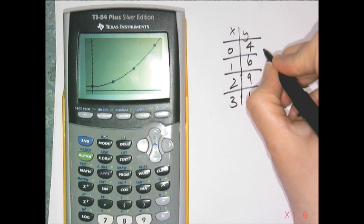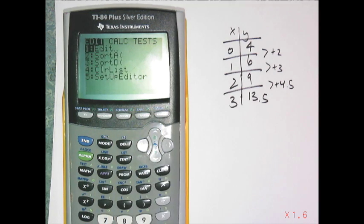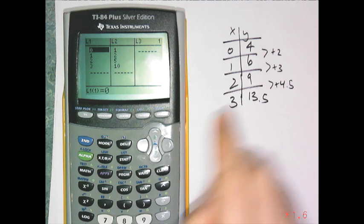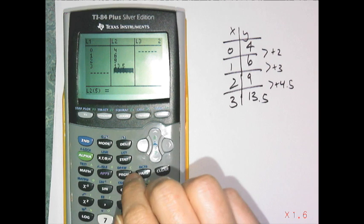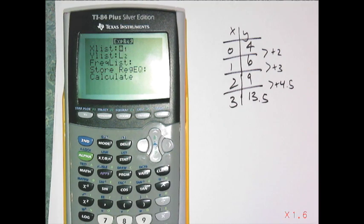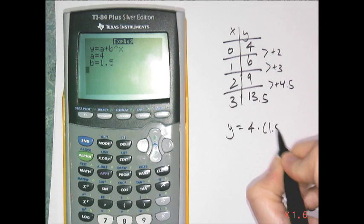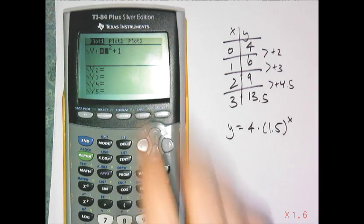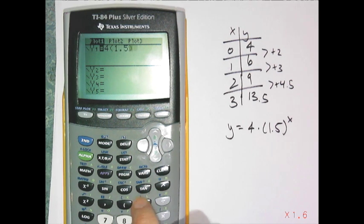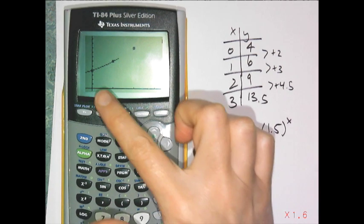Now let's look at a second example. It's not quadratic and not linear, so in Algebra 1 it must be exponential. Go to STAT, Edit, and enter the list — the X values are the same, but the Y values have changed. Press STAT, go to Calculate, choose ExpReg, and press Enter a couple of times. It gives the equation format y = a·bˣ, which works out to y = 4·(1.5)ˣ. I can verify by entering that equation in Y=, checking the table for matching values, and graphing it — it fits the data points.